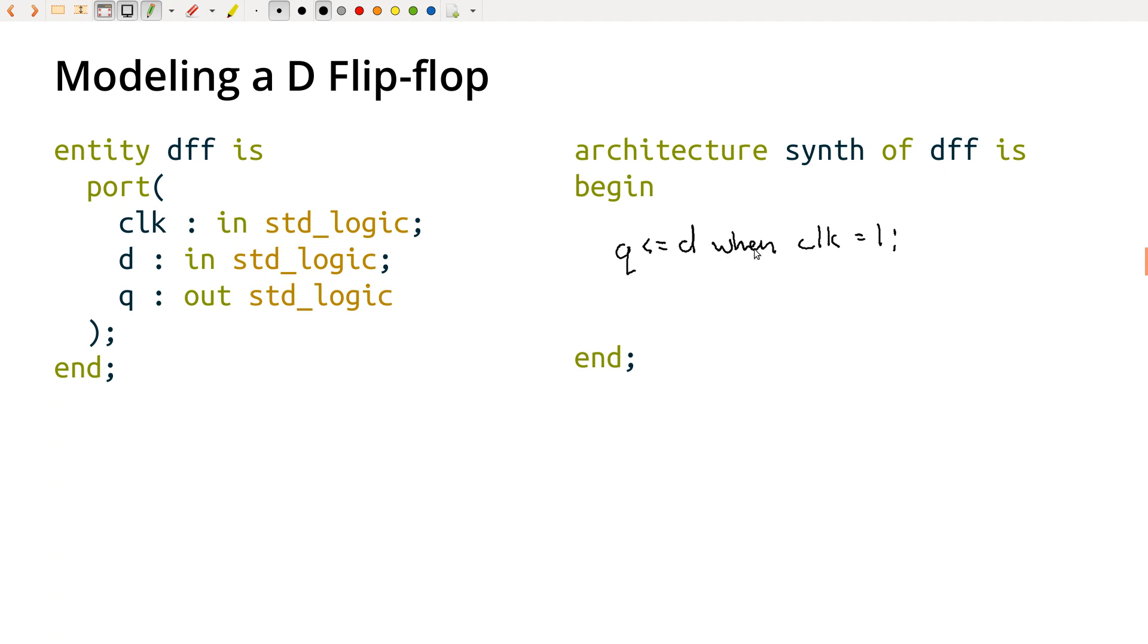But, like, this doesn't really say anything about the rising edge of the clock. And it's a combinational thing, right? Like this is the construct we've been using for describing combinational logic. It's describing Q here in terms of some Boolean equation of D and clock and so forth. And that's not really what we want. We want some kind of way to describe the behavior in terms of changes to the signals, not just in terms of their constant values, algebraically, like in Boolean algebra.